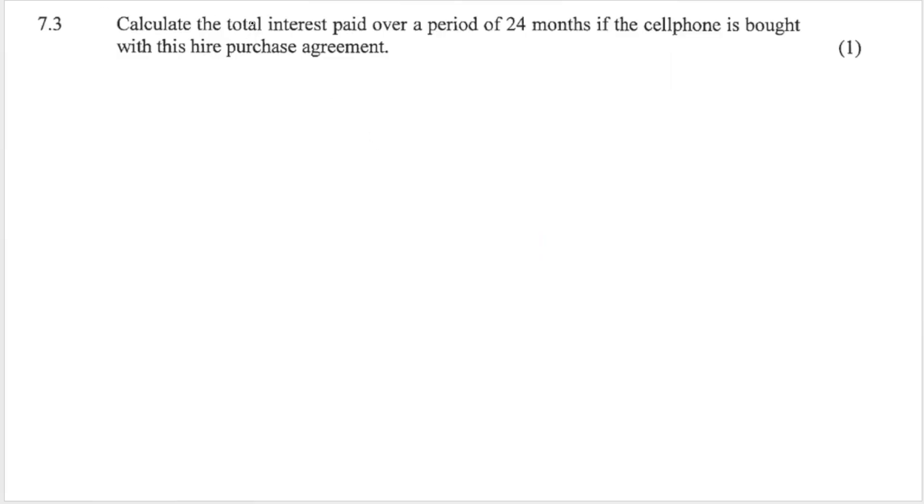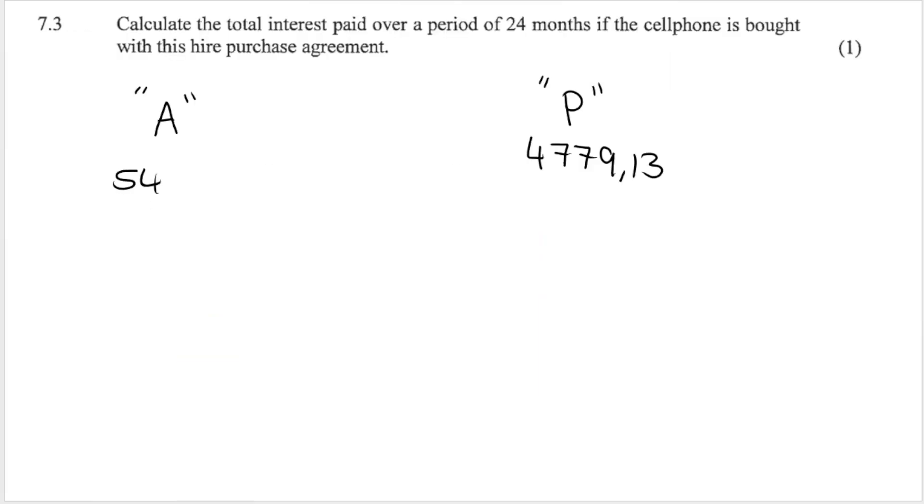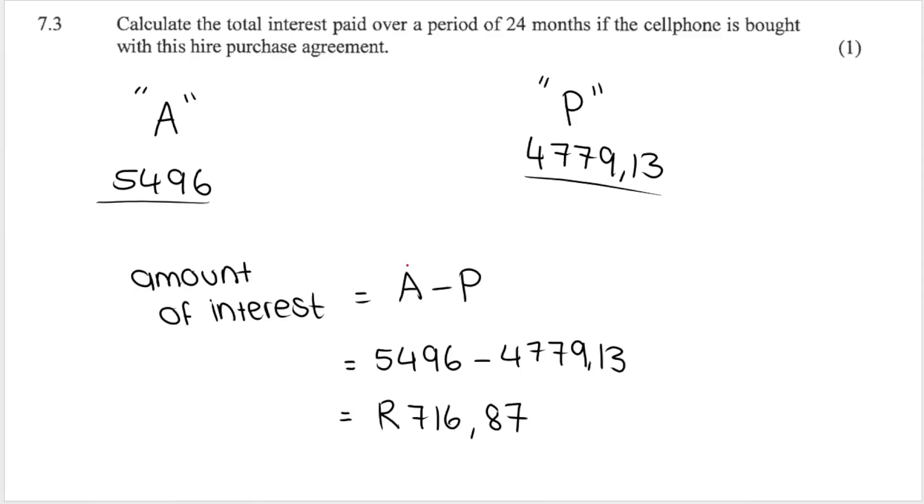7.3 wants to know the total interest paid over the period of 24 months if we buy with the hire purchase agreement. So we have two amounts at the moment. What we have is the amount we just calculated, which we said is basically P, the starting amount. And that is this one over here. And then we also have the final amount, the after amount, the accumulated amount. Based on the advert, once they've obviously added interest, you see that amount is bigger than the other one. So it's R5496. And then essentially, why are these amounts different? These amounts are different because we are paying interest. What that means is in order to calculate the amount of interest, we say A minus P. And using A minus P is always another way that we can use to calculate the amount of interest.